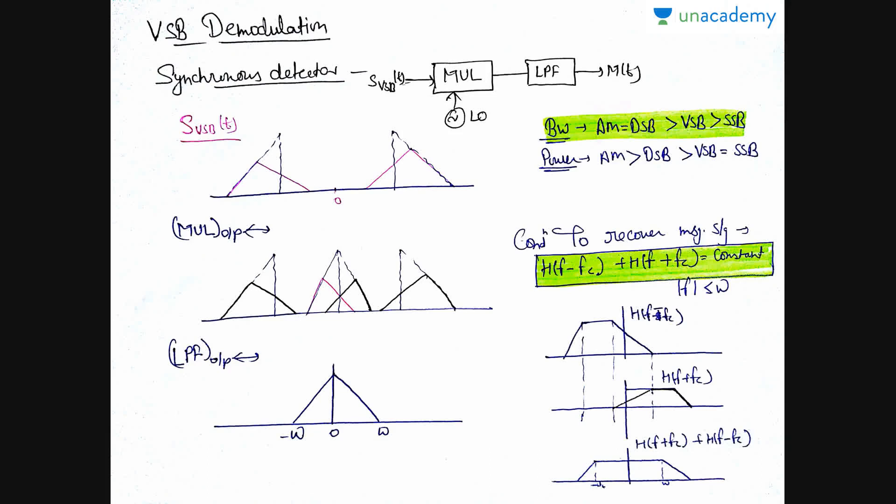In this VSB signal, we are skipping some portion of this upper sideband and using some portion of the lower sideband. But it does not cause any problem and we can recover the message signal easily from this. Now, let us see how to recover the message signal that is the VSB demodulation. For the VSB demodulation, also we use a synchronous detector. That is, we have used this synchronous detector for the AM, DSB, then SSBSC and now also for the VSB. This is the block diagram of this demodulator in which a multiplier and low pass filter is present. At the multiplier input, we have this VSB signal and the local oscillator, that is the carrier signal.